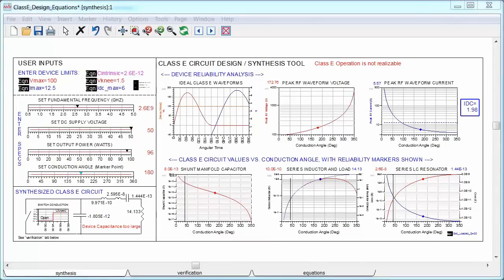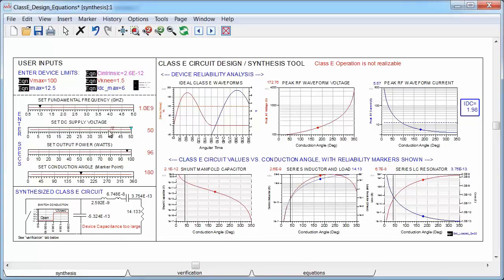What about class E? Well, I'll generate this design using the synthesis tool. I've already entered my device's reliability limits and intrinsic capacitor value, and I'll use the sliders to set the frequency to 1 gigahertz, the supply voltage to 40 volts, and the output power to 96 watts.